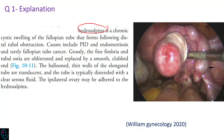Hydrosalpinx is a chronic cystic swelling of the fallopian tube that forms following distal tubal obstruction. Causes of hydrosalpinx include PID, endometriosis, and rarely fallopian tube cancer.